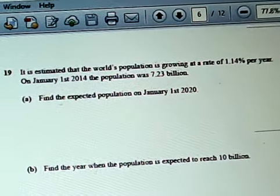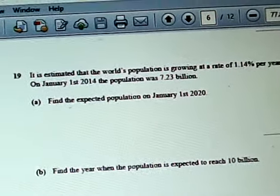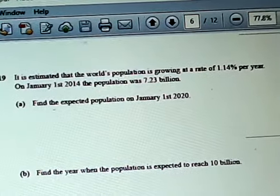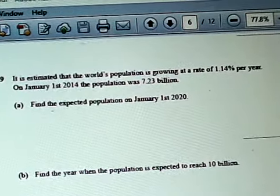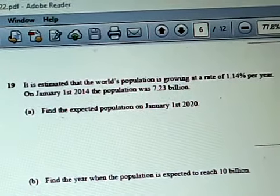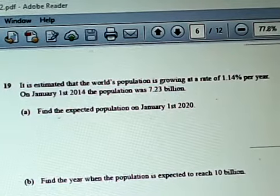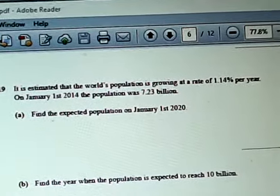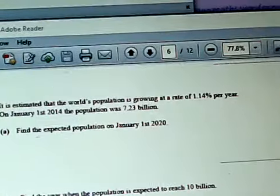So this is the question, number 19. It is estimated that the world's population is growing at a rate of 1.14% per year. On January 1st, 2014, the population was 7.23 billion. Find the expected population on January 1st, 2020.